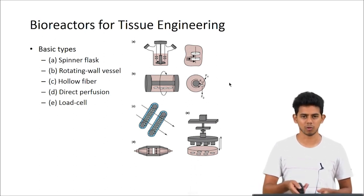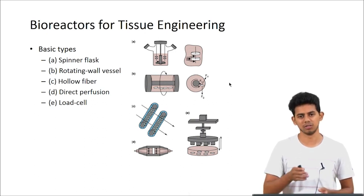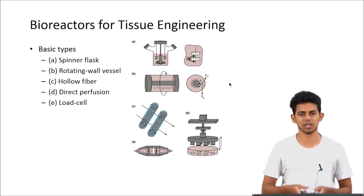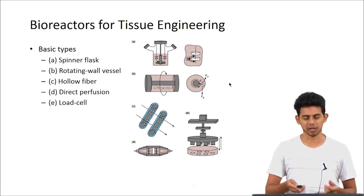Direct perfusion - here a cell and scaffold construct is placed in the center of the chamber and the media is perfused through it so that the spent media comes out on the other side and you can recirculate it or change the media. Then load cell bioreactors - this is when the tissue you are growing requires some sort of mechanical force to grow in the right way, like tendons or bones. You can simultaneously stretch or compress the tissue as they are forming, thereby giving it the physiological conditions required for its development.